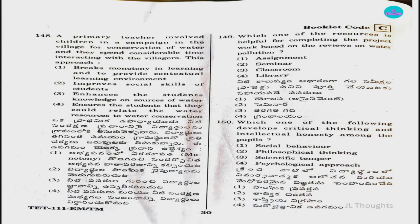Question number 148: A primary teacher involves children in a campaign in the village for conservation of water and they spend considerable time interacting with villagers. This approach — option 1: breaks monotony and provides contextual learning; option 2: improves social skills of students; option 3: enhances knowledge on sources of water; option 4: ensures students relate water resources to conservation. The answer is option two, improve social skills of the students.